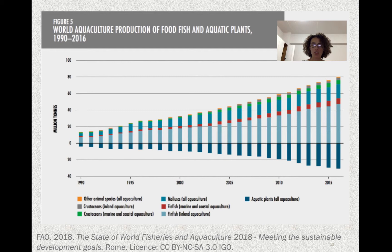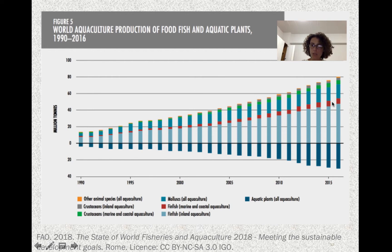Here you have the world aquaculture production — food fish and aquatic plants. The biggest production is shown in the lighter blue color, which is inland fin fish. There is also a very large production of aquatic plants, all of which are farmed. The third biggest production category is mollusks. Marine and coastal fin fish production is still quite small.